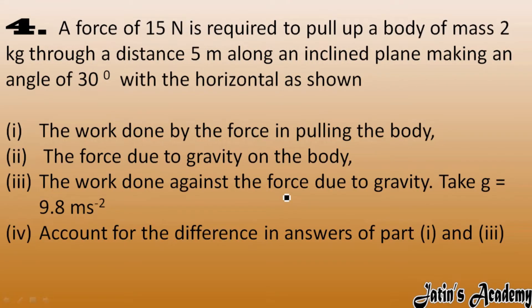A force of 50 N is required to pull up a body of mass 2 kg through a distance of 5 meters along an inclined plane making an angle of 30 degrees with the horizontal. We have to calculate: the work done by the force in pulling the body, the work done against the force due to gravity, and account for the difference.